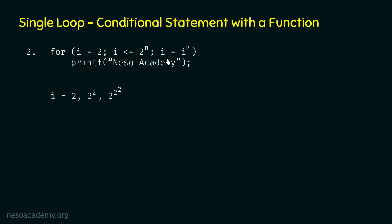In the fourth iteration, i becomes 2 power 2 power 3. We can observe a pattern: the first value of i is 2 power 2 power 0, the second is 2 power 2 power 1, the third is 2 power 2 power 2, the fourth is 2 power 2 power 3. This continues up to 2 power 2 power k, where 2 power 2 power k equals 2 power n. This is the last value of i for which the condition is true.